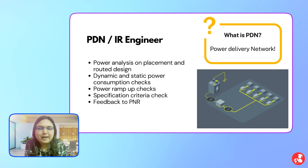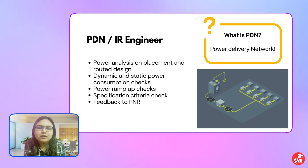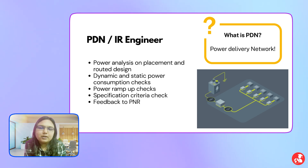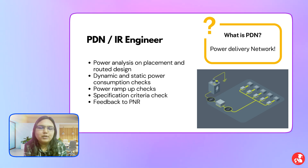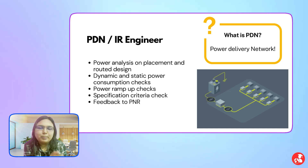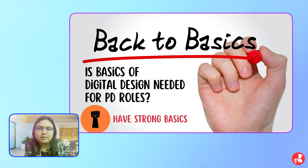We perform some dynamic and static runs, vectorless runs, and ramp-up analysis on the designs. Then we check if our specifications and the outputs we are getting for those designs are being matched. If they are not matched—say we have a criterion that power should be within a certain limit but we are getting power above that limit—then we optimize the design and provide feedback to the PNR team to make changes.